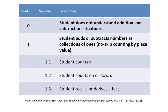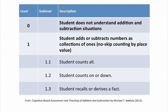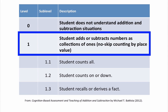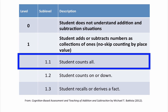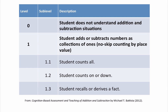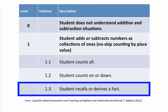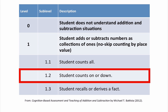For the purposes of assessing students' readiness for Reflex, we're concerned with the very basic levels of development of students' reasoning with addition and subtraction — levels 0 and 1. In the CBA framework's Level 0, students don't understand addition or subtraction situations. They may be able to count a single set of objects, but they don't understand how to join or separate two sets. Level 1 describes the student who adds or subtracts numbers as collections of single units, or ones. This level is further divided into several sublevels: Level 1.1 includes students who count all to solve a problem; Level 1.2 includes students who count on or count down from a number; and at Level 1.3, a student recalls a fact from memory or derives it from another fact known from memory. Students who have achieved at least Level 1.2 — counting on or counting down — are ready to begin learning their facts from memory and building automaticity with both addition and subtraction.